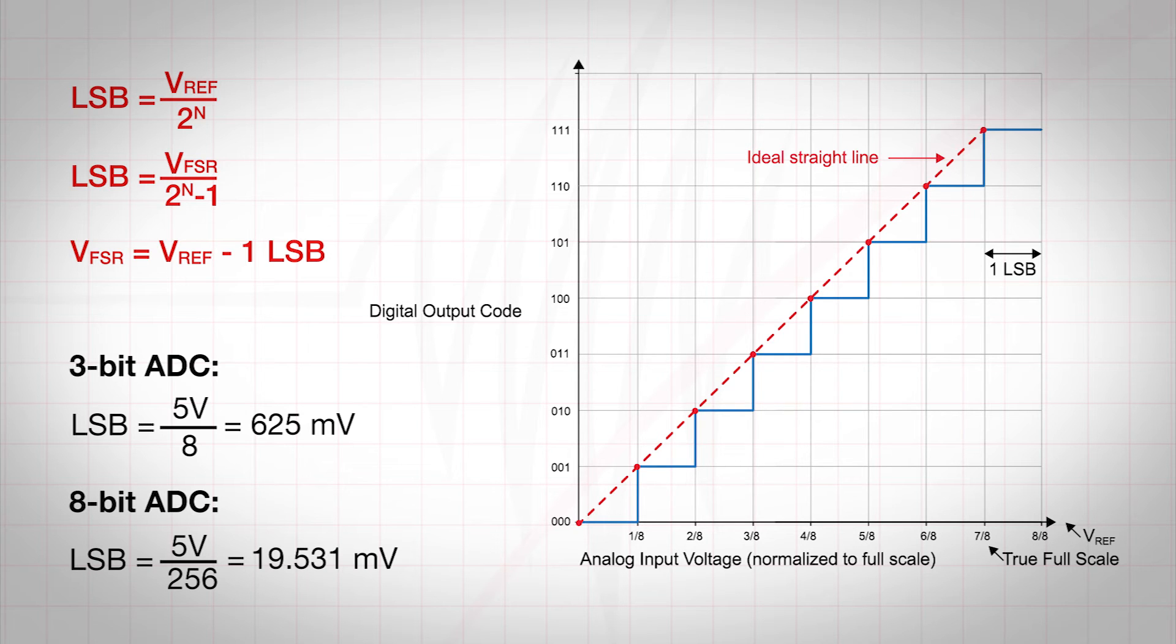An analog signal is a continuous signal with an infinite number of possible values, so it follows that there will be a rounding error if the analog input signal falls between quantization levels. This is known as quantization error, or quantization noise. From the ADC transfer function, we can see the inherent absolute error is going to be 1 LSB.